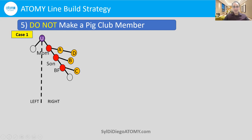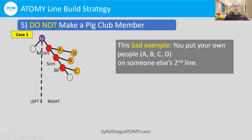Another problem with this pig line or pig club is that at some point, person A is going to realize: are you using me for your mom to get a check? They're not going to be too happy — same with B, C, and D. You have to remember, you don't want to use people. So this is a bad example of making a pig club because you put your own people on somebody's right side.